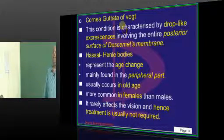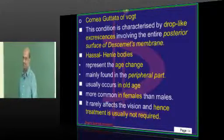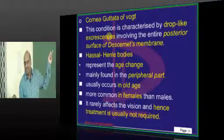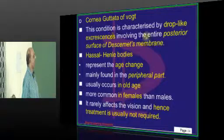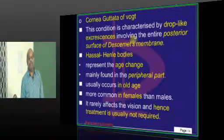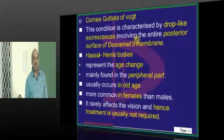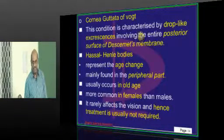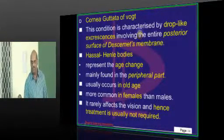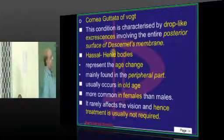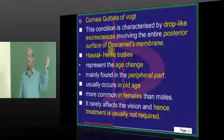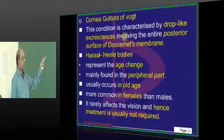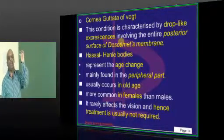Cornea guttata — which type of dystrophy is it? Posterior. It is the posterior surface of Descemet's membrane where the dystrophy typically occurs, and you find drop-like excrescences. In this context, you need to know one more term: Hassall-Henle bodies.